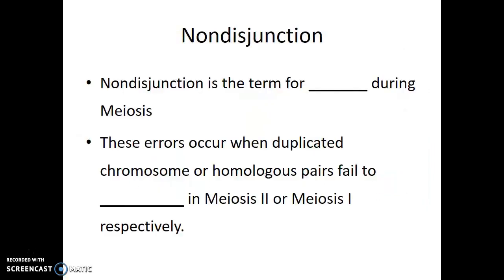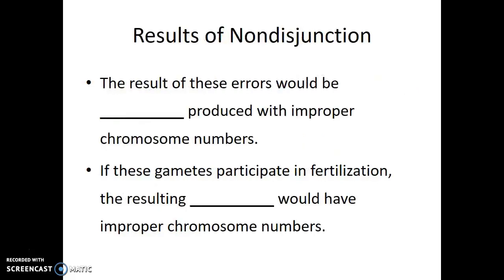The last topic to discuss in relation to meiosis is what happens when there's a mistake — when the chromosomes don't separate properly. This is known as non-disjunction. Non-disjunction is the term for errors during meiosis that occur when duplicated chromosomes or homologous pairs fail to separate in meiosis II or meiosis I, respectively. The result of these errors would be gametes produced with an improper number of chromosomes.